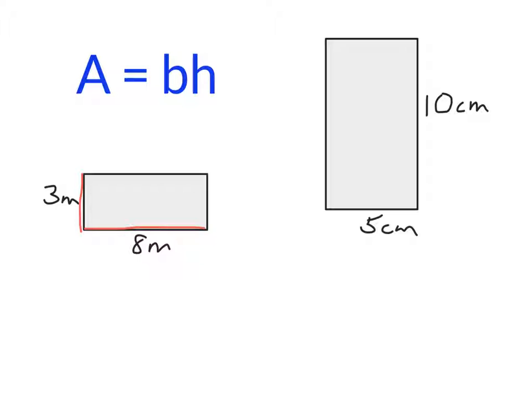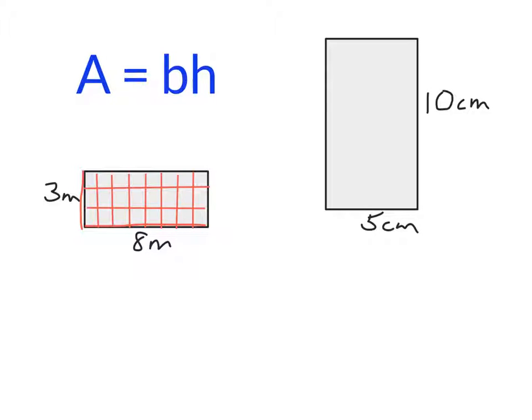That is because if I section it off by 3 rows versus 8 columns, that would get you 24 different sections.